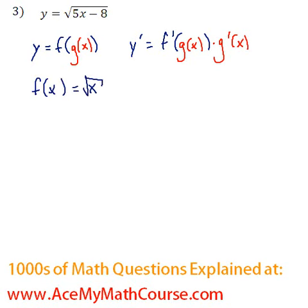And our inside function which is g of x would be just 5x minus 8. That way f of g of x is square root of 5x minus 8.